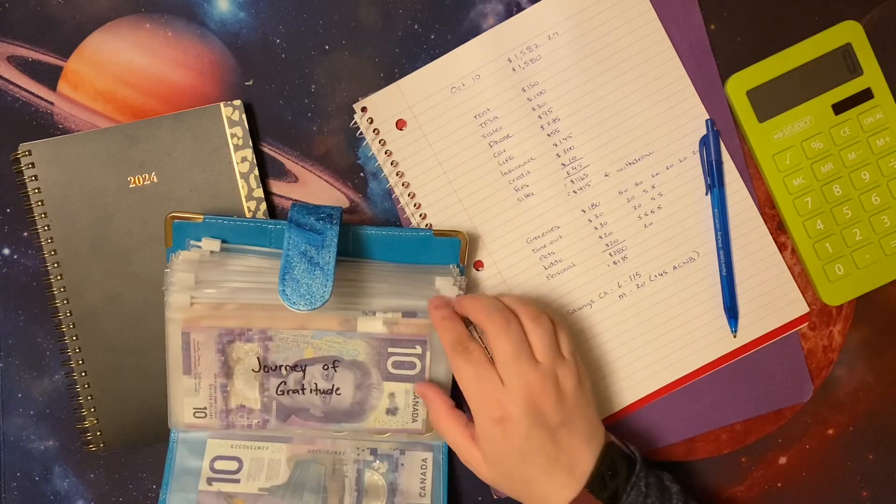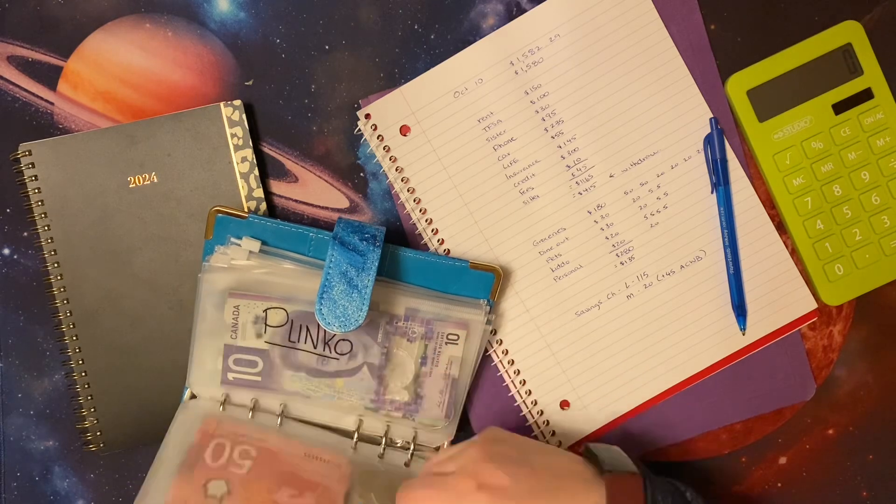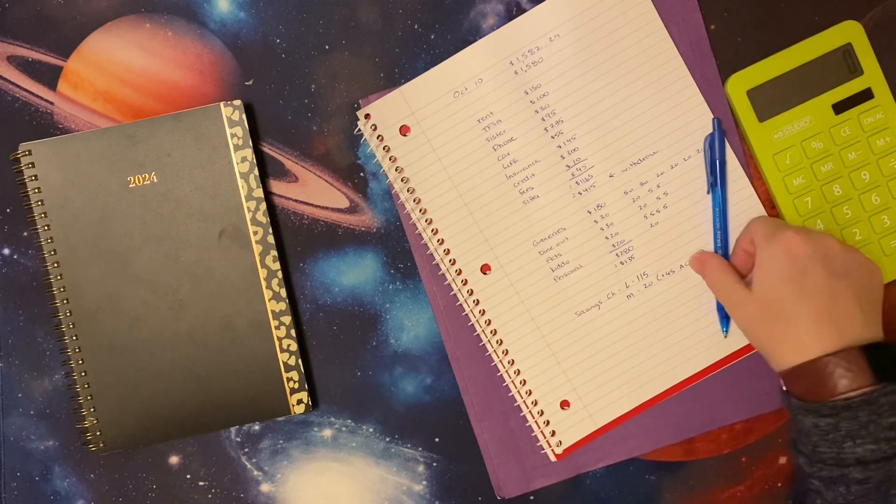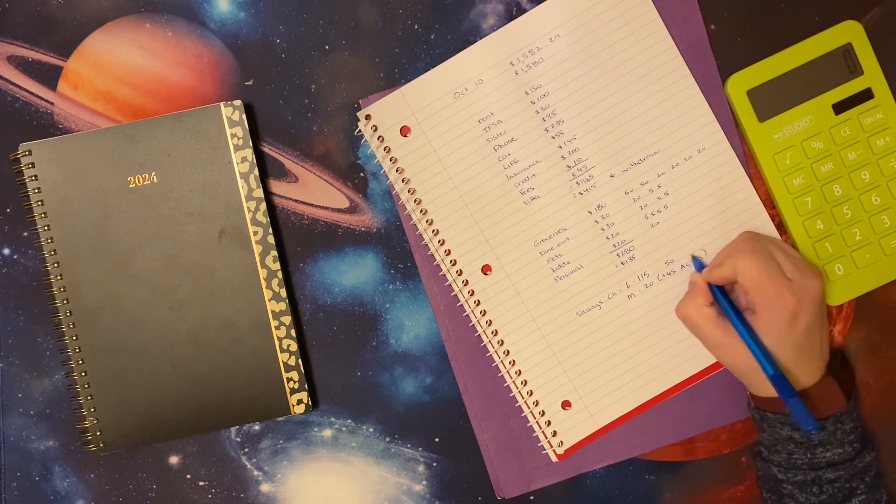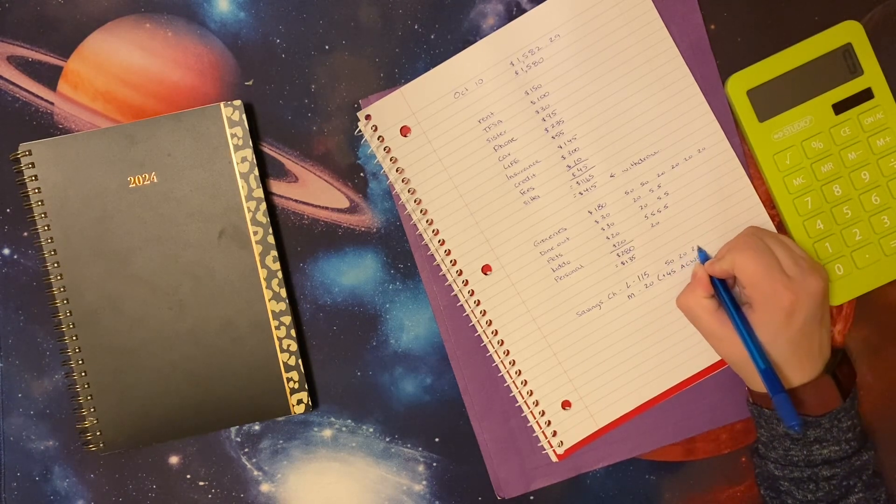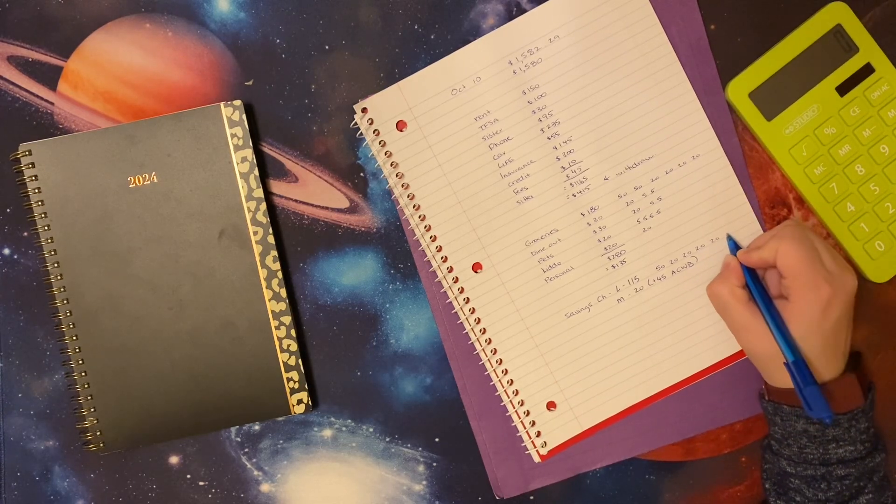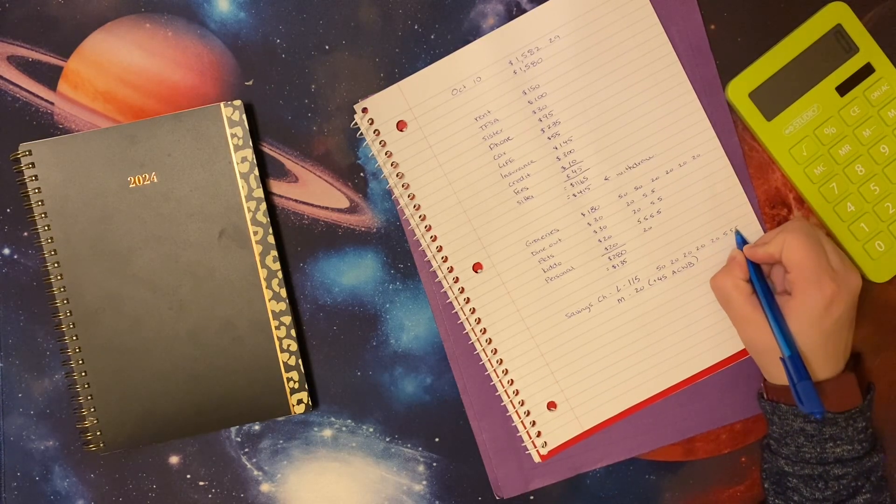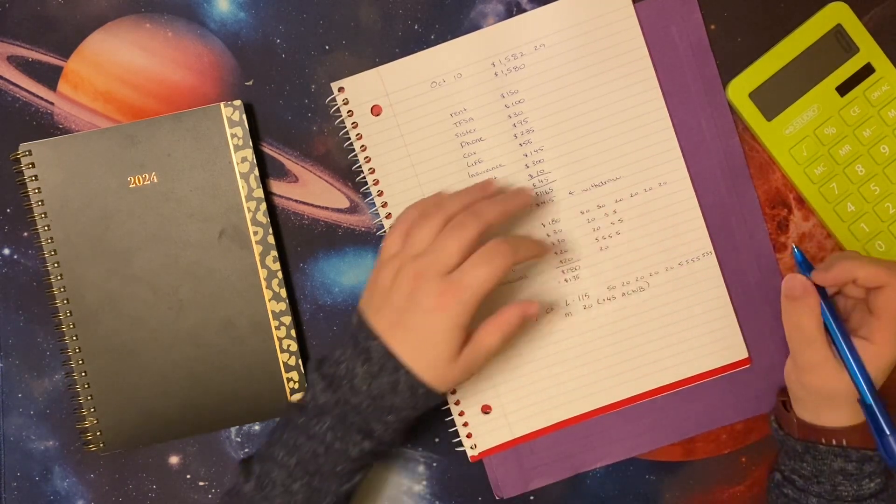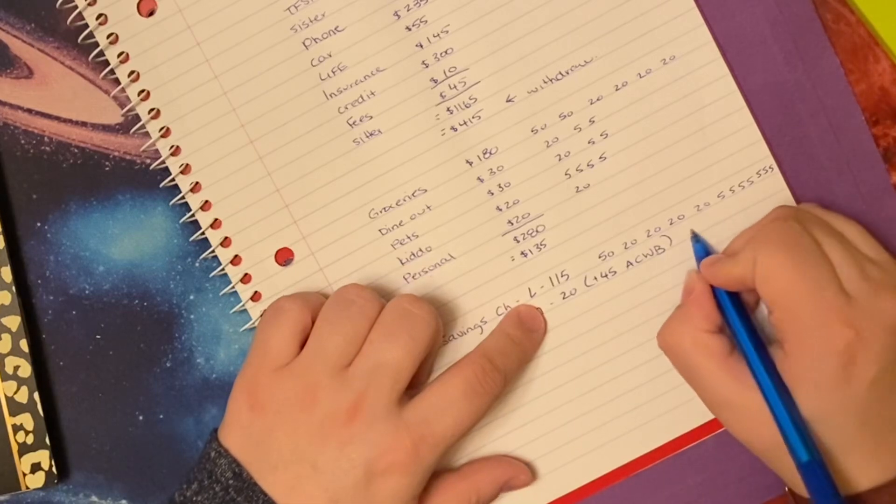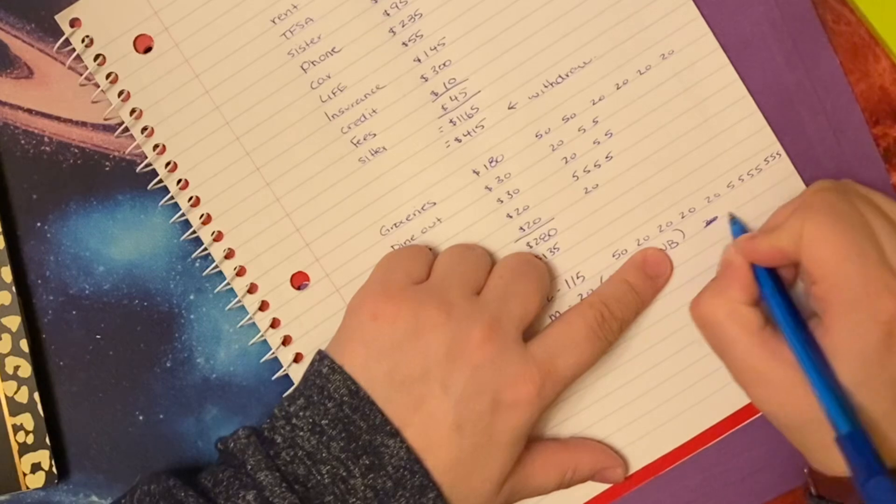Let's do what we're going to be withdrawing. We're going to be taking $415 out. For groceries, I'll do $150 and then $20, $40, $60, $80. Dine out we'll do $20 and two fives. Pets we'll do $20 and two fives. Kiddo we'll do four fives. Personal I'll just do a $20.